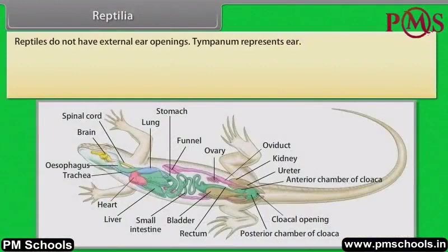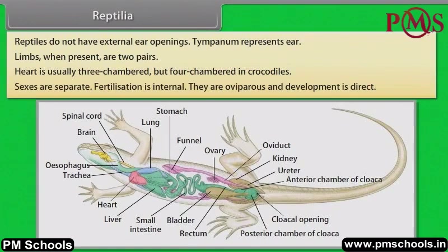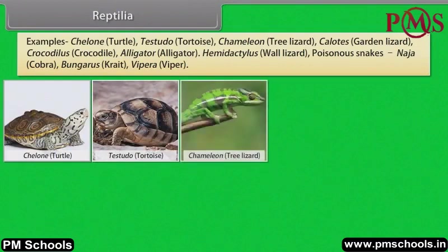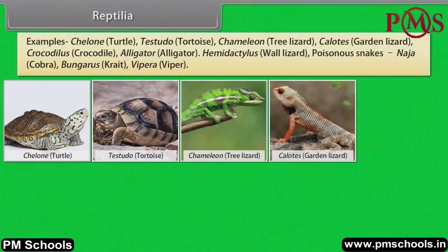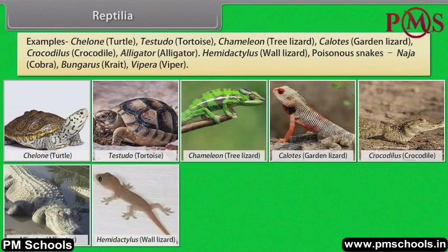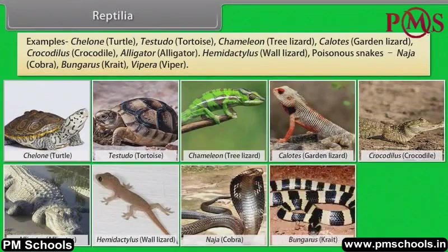Reptiles do not have external ear openings; tympanum represents the ear. Limbs, when present, are two pairs. Heart is usually three-chambered, but four-chambered in crocodiles. Sexes are separate. Fertilization is internal. They are oviparous and development is direct. Examples: Chelone (turtle), Testudo (tortoise), Chameleon (tree lizard), Calotes (garden lizard), Crocodilus (crocodile), Alligator, Hemidactylus (wall lizard). Poisonous snakes: Naja (cobra), Bangarus (krait), Vipera (viper).